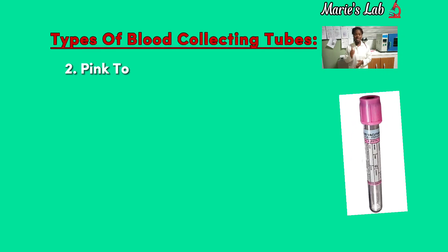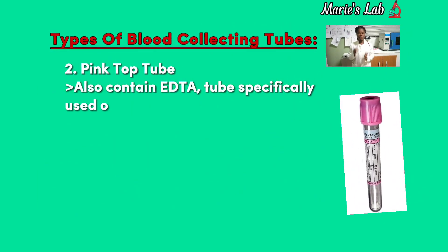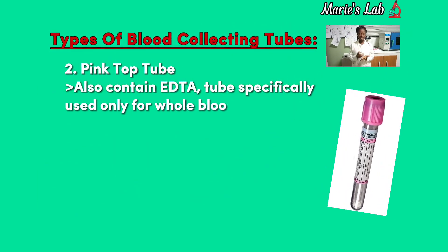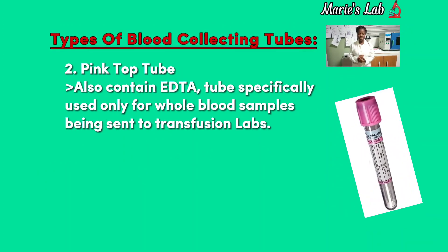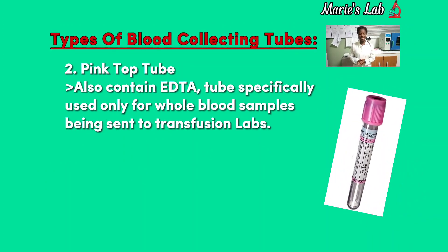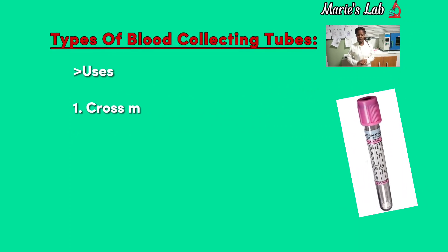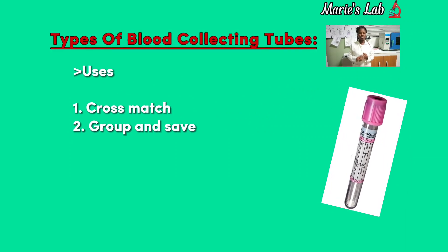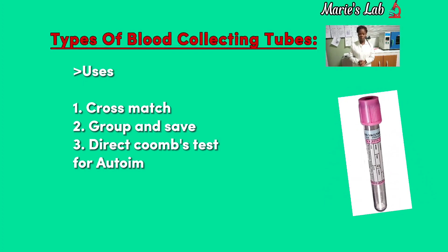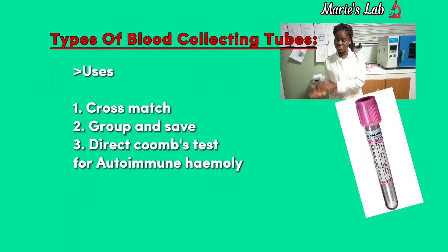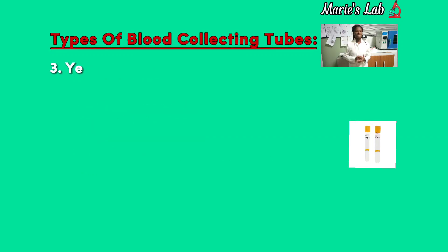Number 2: Pink top tube, which also contains EDTA, tubes specifically used only for whole blood samples being sent to transfusion labs. The uses of these tubes are: one, cross-matching; two, group and screen; three, direct Coombs test; four, auto-immune; immunity; and paroxysmal nocturnal hemoglobinuria.